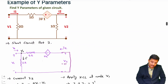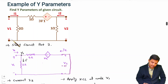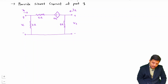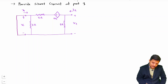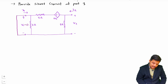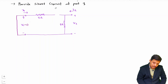Now I'll provide a short circuit at port 1, making v1 = 0. Since v1 = 0, the resistor connected there gets shorted and is removed. Also, the dependent voltage source 3v1 becomes 3×0 = 0, so that voltage source is also removed. This gives us the equivalent circuit when port 1 is shorted.